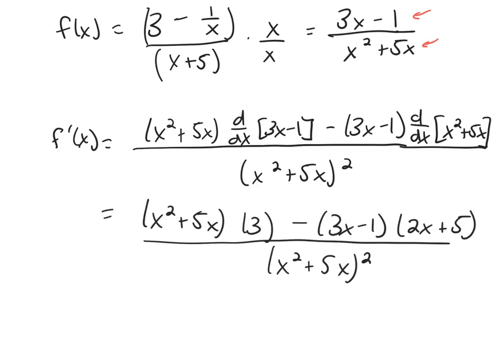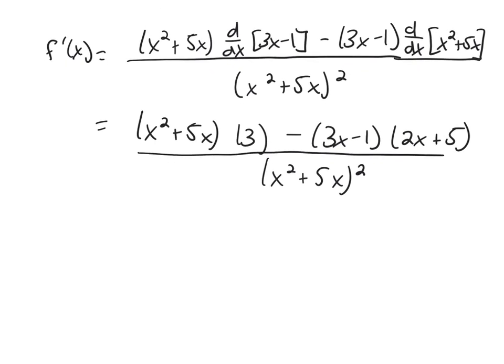So we are going to simplify this a little bit. Let's see, 3x squared plus 15x minus, and then you need to foil this out, minus 5.